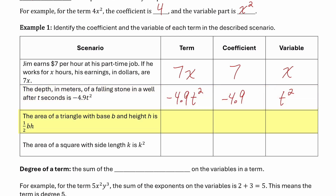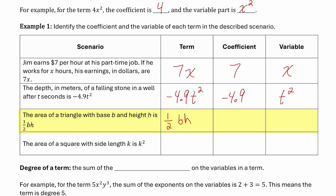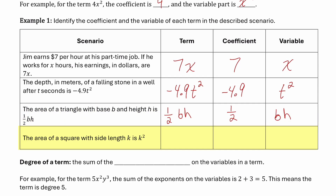The third scenario: the area of a triangle with base b and height h is one half times b times h. The number part, the coefficient, is one half, and the variable part is b and h. The last scenario: the area of a square with side length k is k squared. There's no visible coefficient, but when you don't see a coefficient in front of a variable, there is a coefficient of 1, because 1 times k squared equals k squared. So the coefficient is 1 and the variable part is k squared.